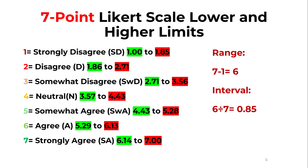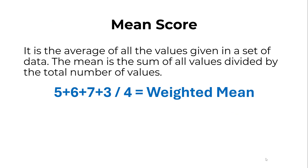For rank four, 3.57 to 4.43 corresponds to neutral. For rank five, 4.43 to 5.28 corresponds to somewhat agree. For rank six, 5.29 to 6.13 corresponds to agree. And finally, rank seven, 6.14 to 7.00, corresponds to strongly agree.